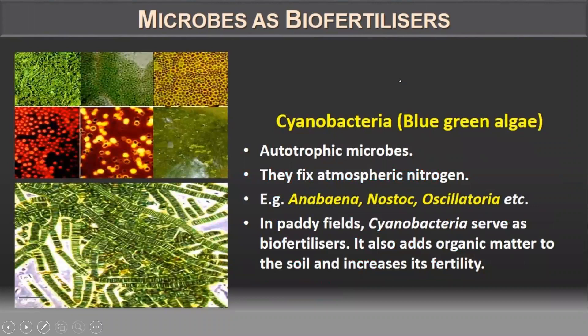Blue-green algae (cyanobacteria) are autotrophic microbes that fix atmospheric nitrogen. Examples include Anabaena, Nostoc, and Oscillatoria. In paddy fields, these organisms serve as biofertilizers — they add organic matter to the soil and help increase soil fertility. Biofertilizers not only help plants grow but also increase the fertility of the soil.